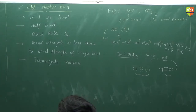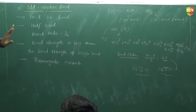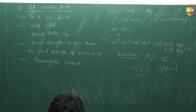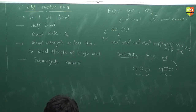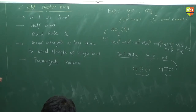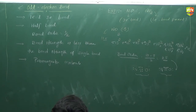NO has a 3-electron bond; NO₂ has a bond order equal to 2. You won't get more than these two examples. Wherever you are getting 0.5 in the bond order, it means there is a half bond. So 0.5 means there is a half bond — that is the concept.